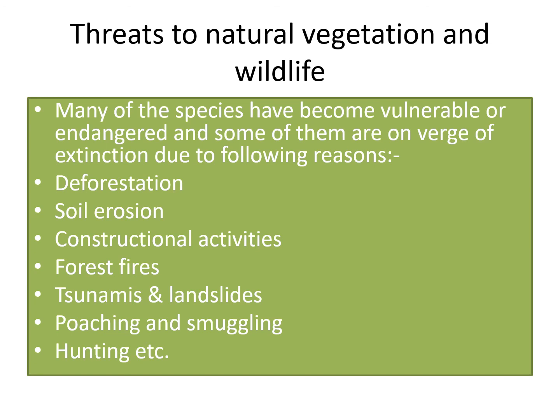There are some threats to natural vegetation and wildlife. Many species have become vulnerable or endangered, and some are on the verge of extinction, due to deforestation, soil erosion, constructional activities, forest fires, tsunamis, landslides, poaching and smuggling. Poaching means illegal hunting. Smuggling means trading in bones and parts of animals illegally.